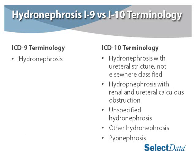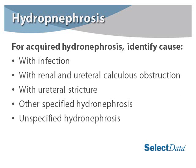When we compare terminology in ICD-9 and ICD-10, we had one code in ICD-9 for hydronephrosis. In ICD-10, we now have codes available for hydronephrosis with ureteral stricture not elsewhere classified, hydronephrosis with renal and ureteral calculus obstruction, unspecified hydronephrosis, other hydronephrosis, or pyonephrosis. We must identify the cause: Is it with infection? Is it with renal and ureteral calculus obstruction? Is it with ureteral stricture? Is it other specified or unspecified hydronephrosis?